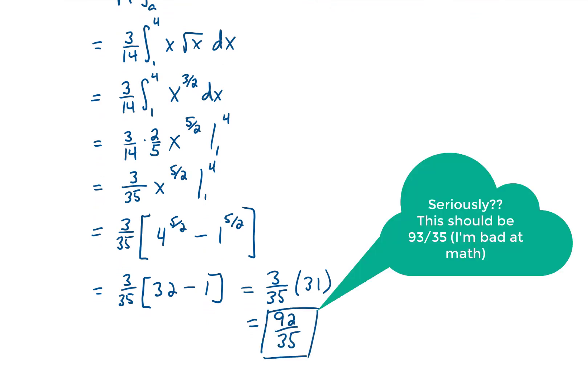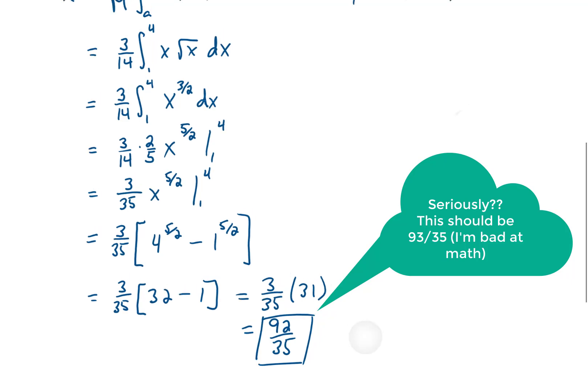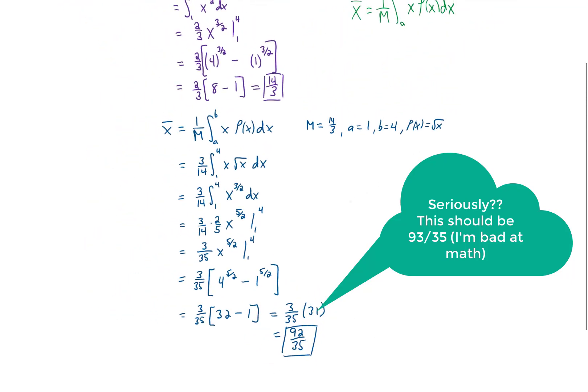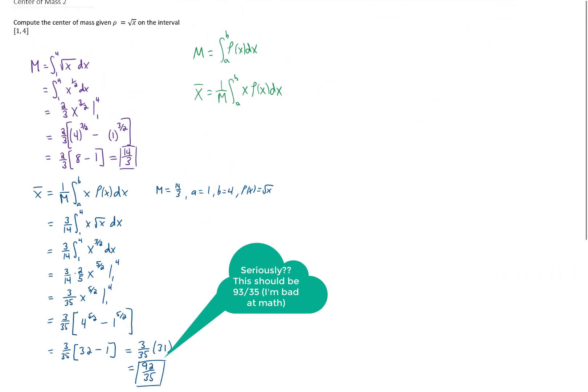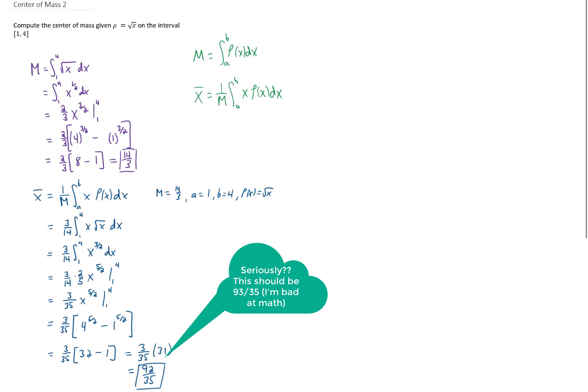Plugging that into a calculator is going to give you some decimal between 2 and 3, and a little bit of a sanity check on that tells us that that's probably about in the right territory. At least that center of mass does fall on the interval from 1 to 4. So I think that we did this problem correctly, and I think that we're ready to move on to the next one.